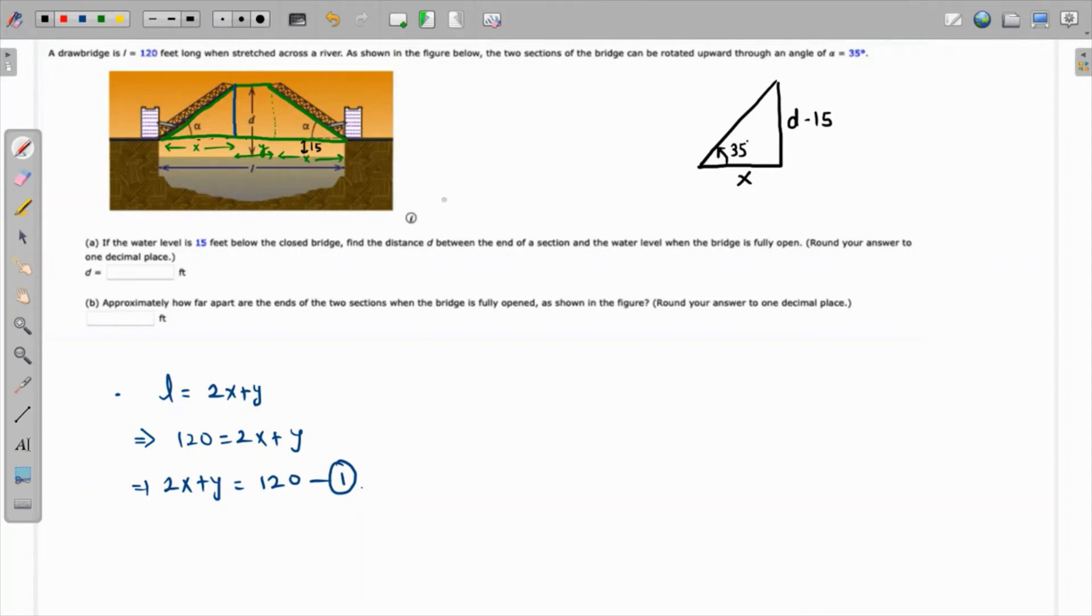Now there is one very interesting observation: if this is z and when the bridges are open, when they close the bridge will definitely completely come over this river. Don't you think that z plus z is nothing but equal to the length? So 2z equals L, which means z is half of L. L is already 120, so z is 60.